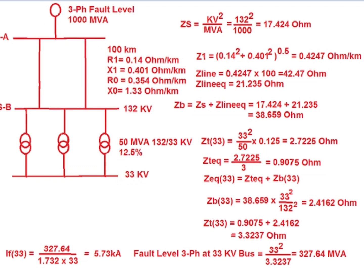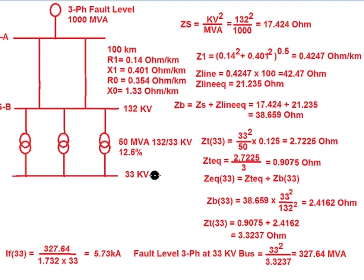In summary: substation A fault level is known at 1000 MVA. Between substation A and substation B there exist two parallel lines. At substation B there are three transformers connected in parallel. A fault occurring at the 33 kV bus can be calculated using this method to find the fault level at the 33 kV bus.